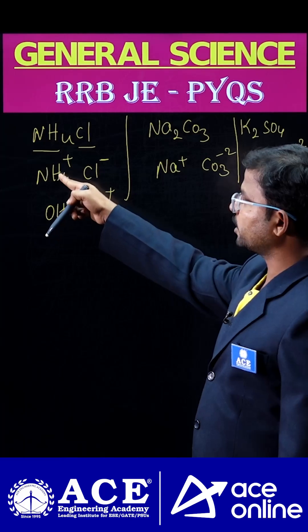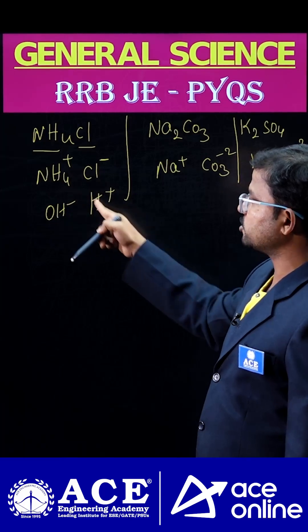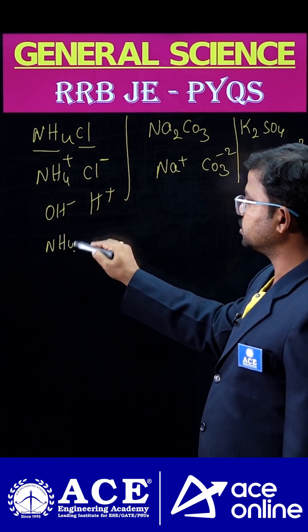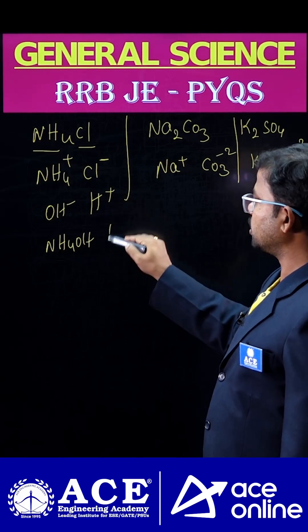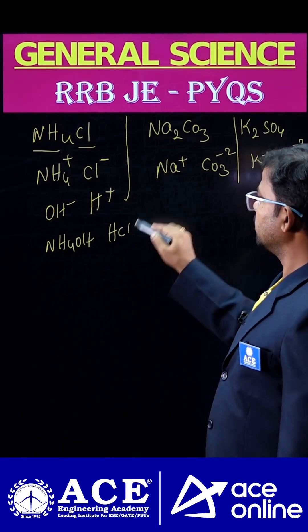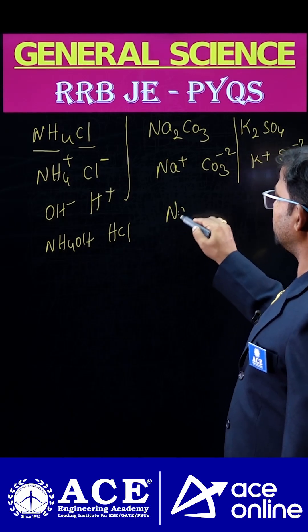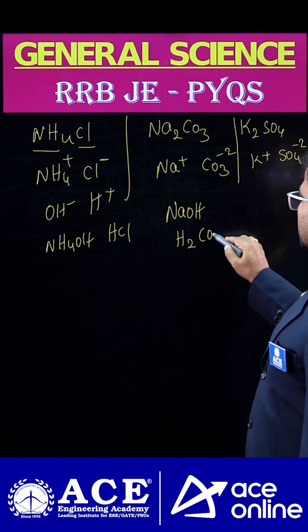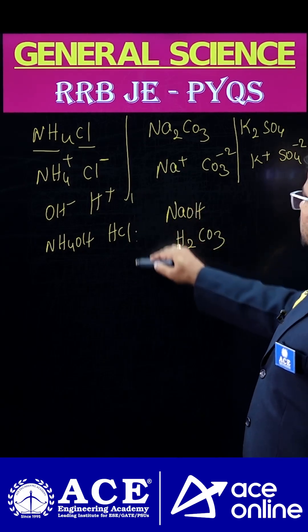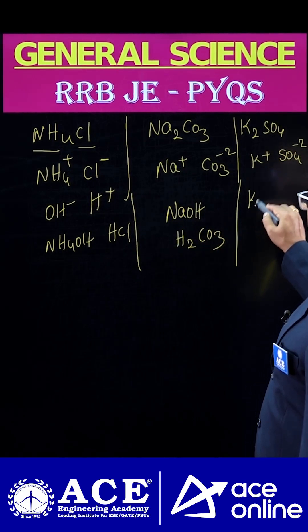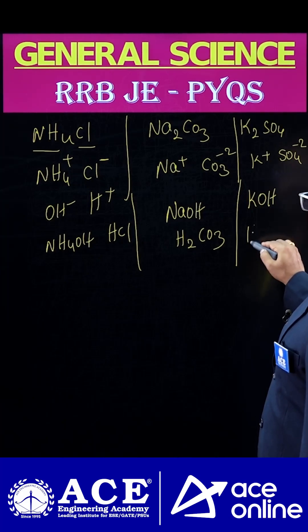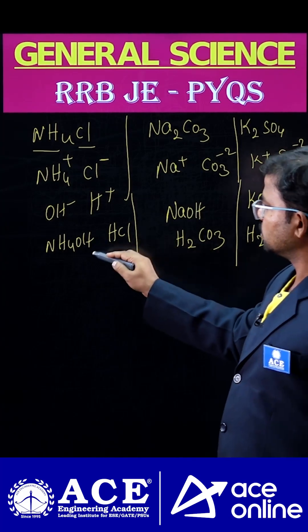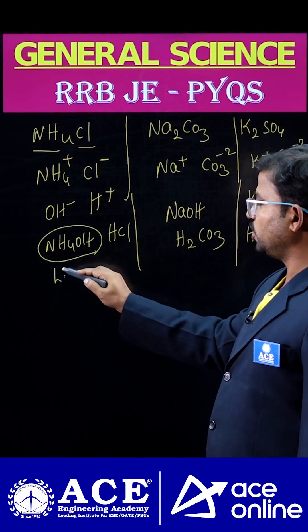We add OH- ions to cations and H+ ions to anions. For NH4Cl, we get NH4OH from the cation and HCl from the anion. For Na2CO3, the cation gives NaOH and the anion gives H2CO3 (carbonic acid). For K2SO4, the cation gives KOH (potassium hydroxide) and the anion gives H2SO4 (sulfuric acid). NH4OH is treated as a weak base.